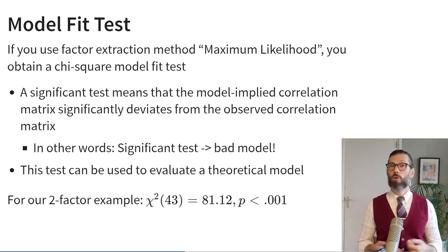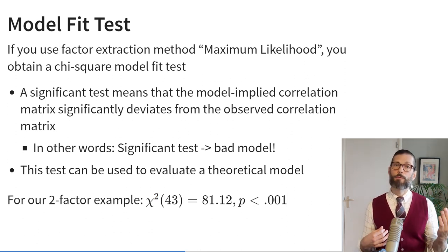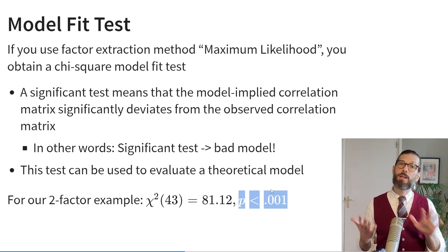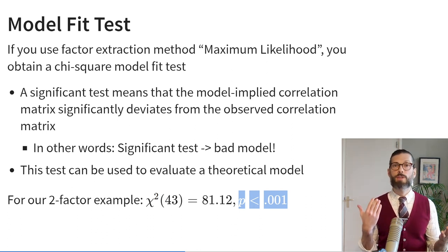When you use maximum likelihood to extract your factor solution, you can obtain a chi-square test of model fit. A significant test means the model-implied correlation matrix significantly differs from the observed correlation matrix — in other words, if your chi-square test is significant, you have a bad model. You can use this to evaluate a theoretical model. I theorized that 12 emotions break down into two factors — one for positive and one for negative emotions. Looking at the chi-square test, I observe a chi-square value on 43 degrees of freedom of 81.12 with a p-value smaller than 0.001, meaning there is significant misfit between the reproduced and observed correlation matrices. So our model is a little bad.